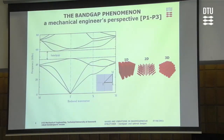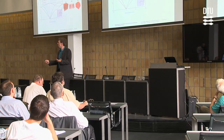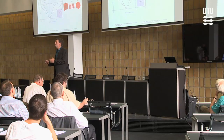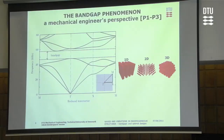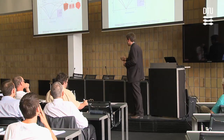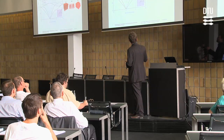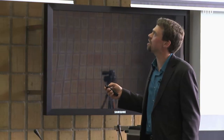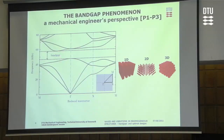This band gap effect may occur in 1D, 2D, and 3D periodic materials. The term 'band gap' needs some explanation, because some people think it has to do with the spacing between periodic inclusions — but that's not the meaning. The meaning is that we have a gap in the frequency spectrum in the band diagram.